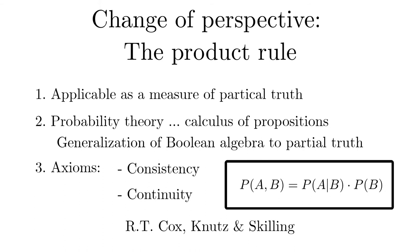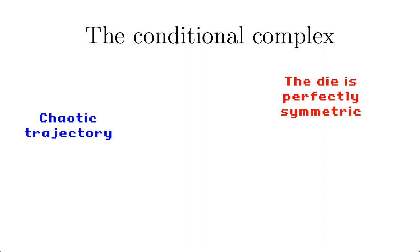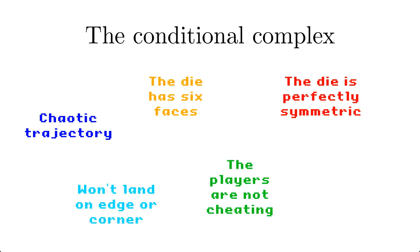If there are more than two propositions, there are several choices of propositions for which we can compute the probabilities conditional on the others, corresponding to different perspectives of the problem. Note, there is no such thing as an unconditional probability. It always relies on assumptions. Like the die is perfectly symmetric, the throw guarantees a chaotic trajectory, the players are not cheating, the die has six faces, it will never land on an edge or corner, and so on.